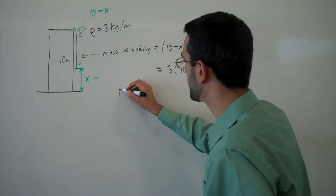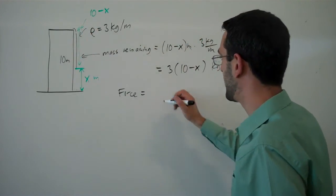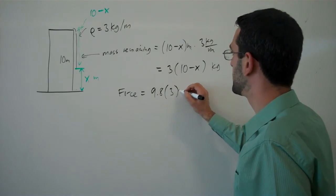From that, we can find the force exerted by this remaining bit of chain. That would be gravity times the mass.